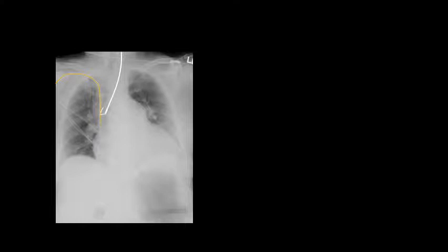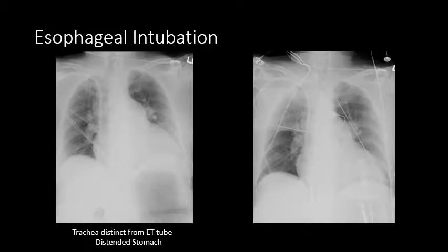Here is another interesting example. We have a subclavian line, and we can see the endotracheal tube outlined by a thick white line. Interestingly, the tube appears to project lateral to the trachea. We can also see in the lower corner of the image a markedly distended stomach. This represents esophageal intubation. After repositioning, we can see the catheter following the course of the trachea and terminating above the carina in good position.